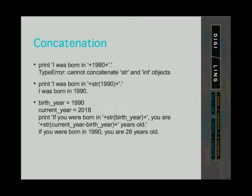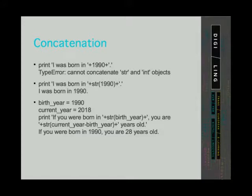We have to be careful when concatenating different data types. Concatenation with strings can only be done with strings. So if we wanted to print a message 'I was born in' and then put an integer data type, the program will return an error saying that it cannot concatenate string and integer objects. This error message is great because it says exactly what our problem is. Since we already know that we can use a conversion function to convert an integer to a string, we can call the string function on the year.